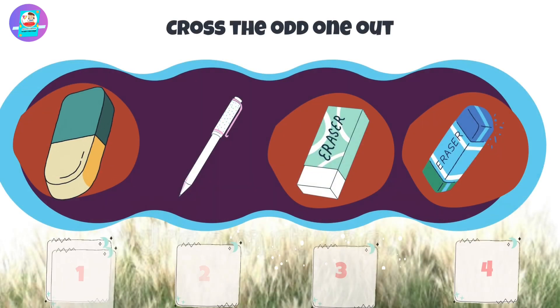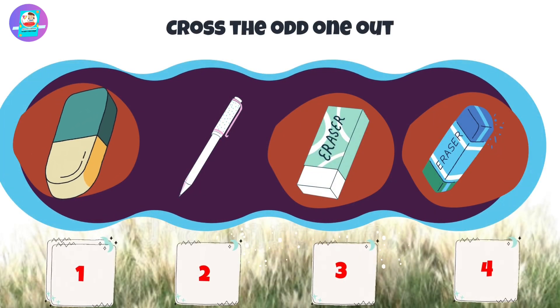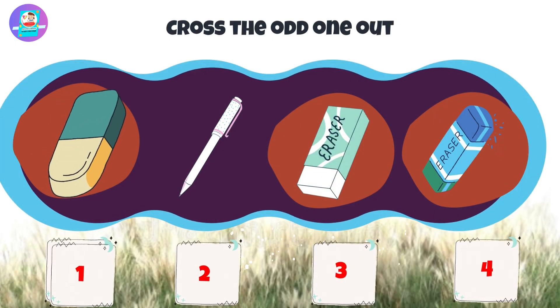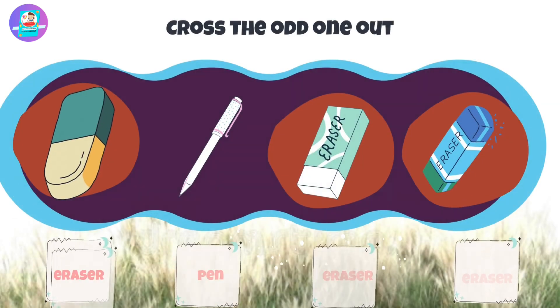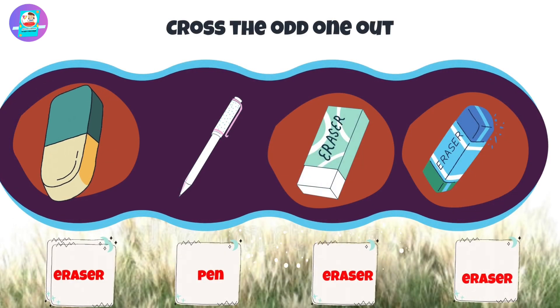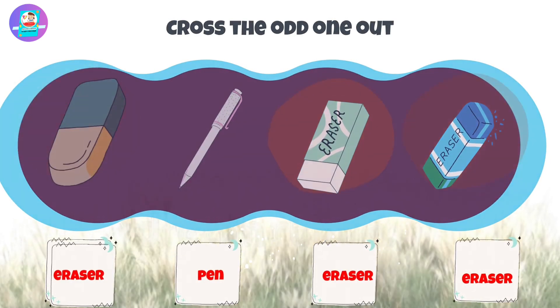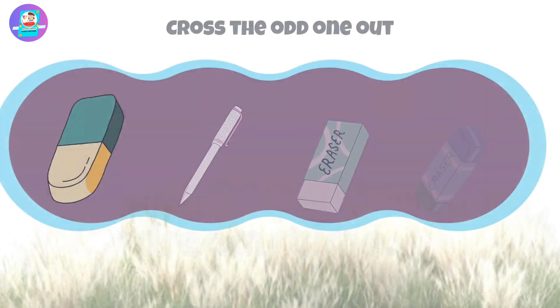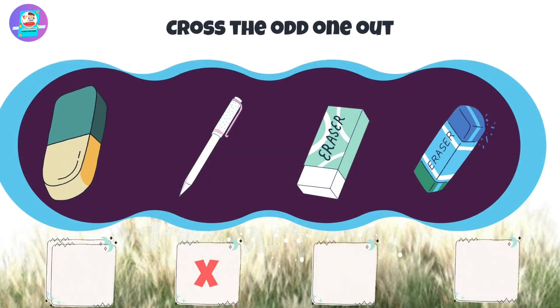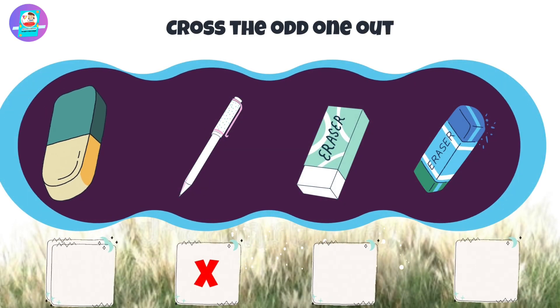Okay, let's check first. When we see here we have 3 erasers and 1 pen. So put a cross on this pen.